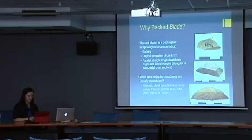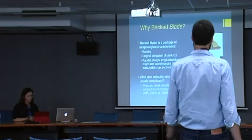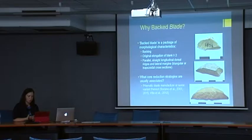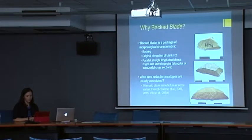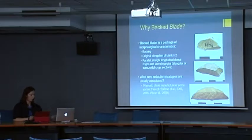This length-to-width ratio of two is pretty universal throughout blade definitions. However, a 'backed blade' is often shorthand for 'backed prismatic blade,' which is an elongated flake with one or two parallel straight longitudinal dorsal ridges and parallel lateral margins. The most frequently associated core reduction strategy with Howison's Port backed artefacts is one which involves the production of prismatic blades, and there have been a number of similar sequences to prismatic blade manufacture proposed for different Howison's Port assemblages.